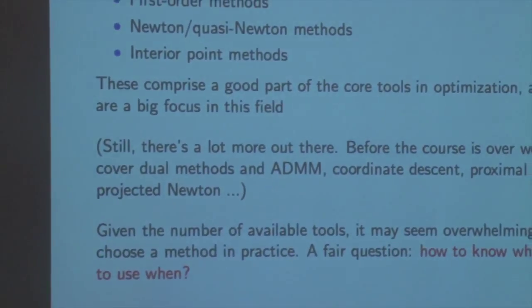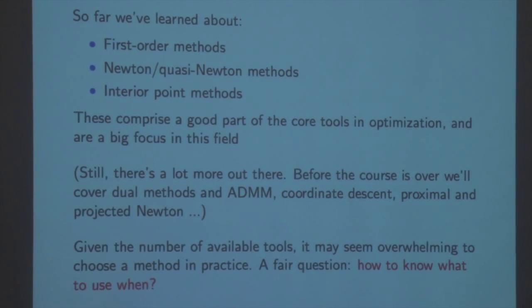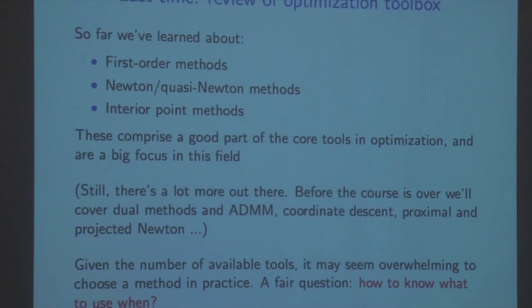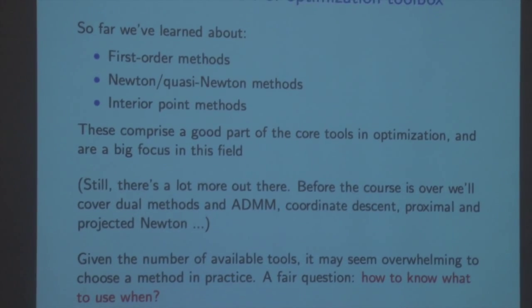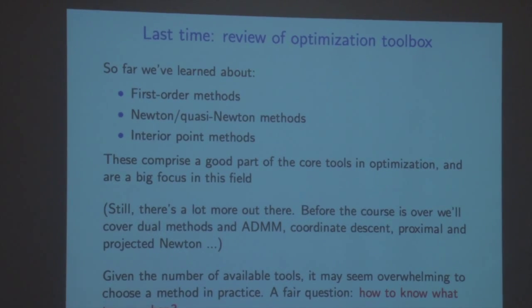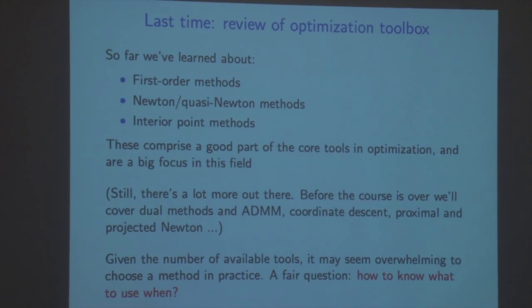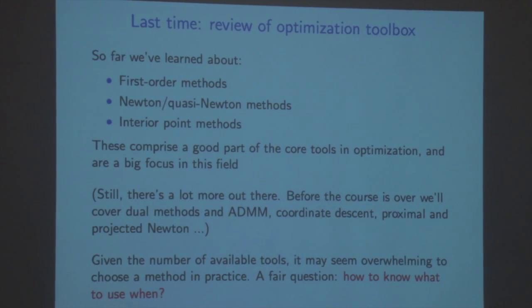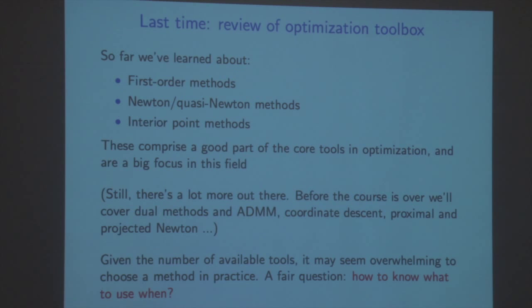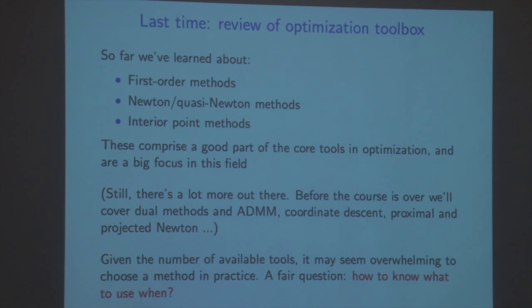Review of last time: we spent maybe the first third or half of the lecture on a big table of algorithms. So far we've learned algorithms that fall into three classes. First-order methods — gradient descent, sub-gradient descent, proximal gradient, accelerated proximal gradient. Second-order methods, which we think of as Newton's method being the canonical example, but quasi-Newton methods are also often called second-order methods even though they actually don't use the Hessian — they approximate it. And then interior point methods, which build on second-order methods and extend them so we can handle constraints by introducing barrier functions.